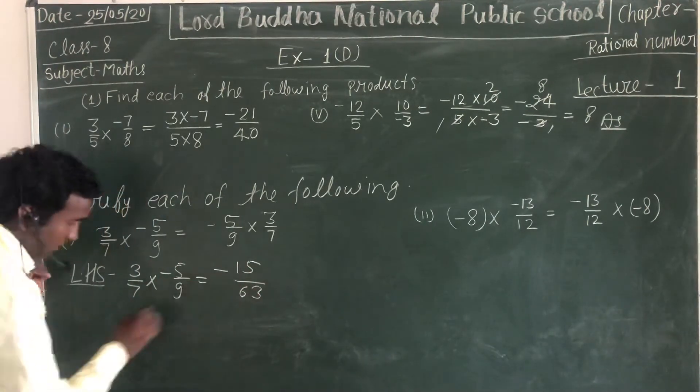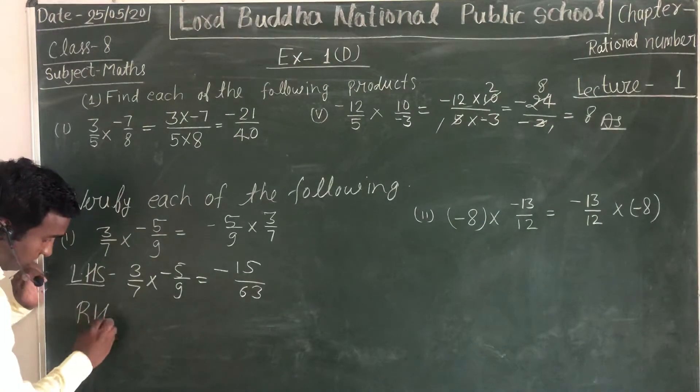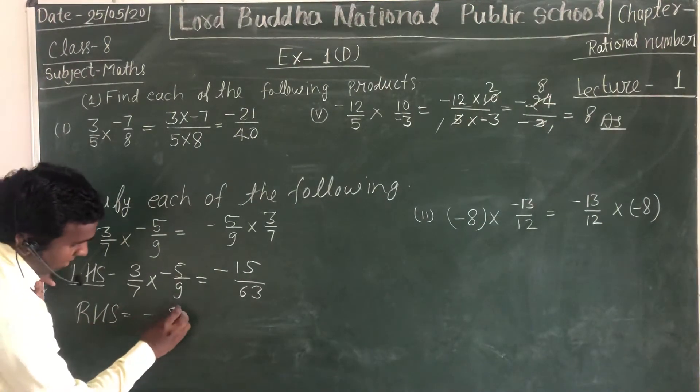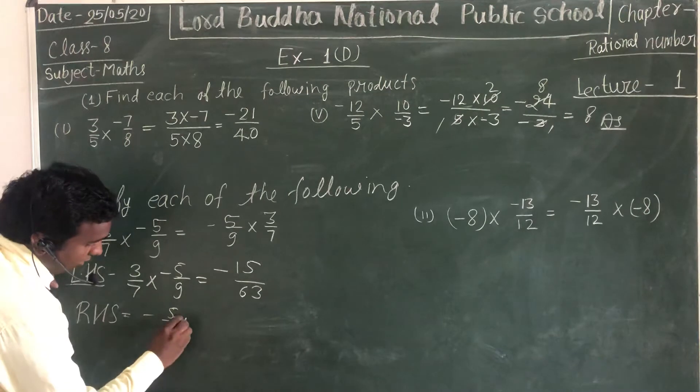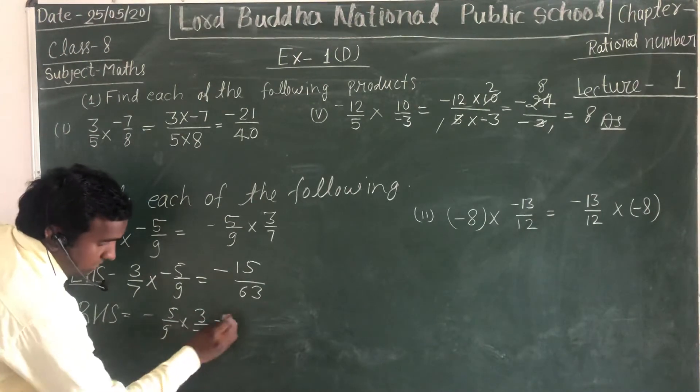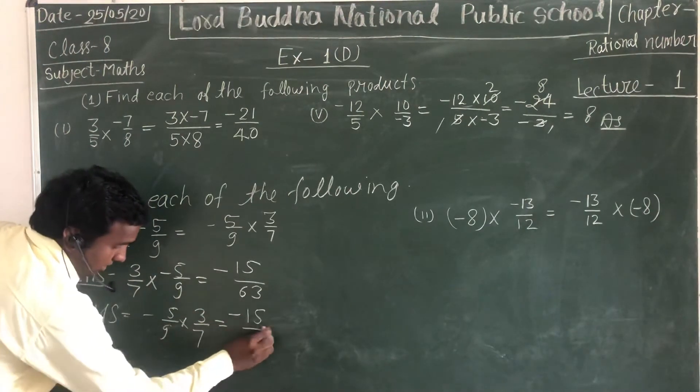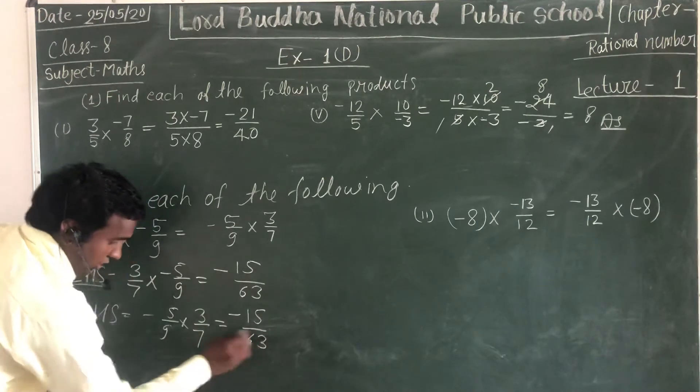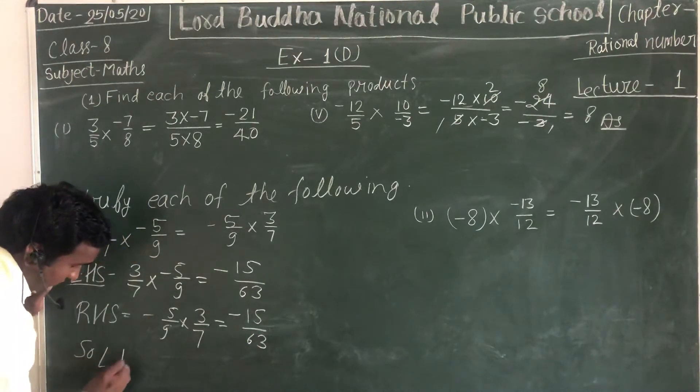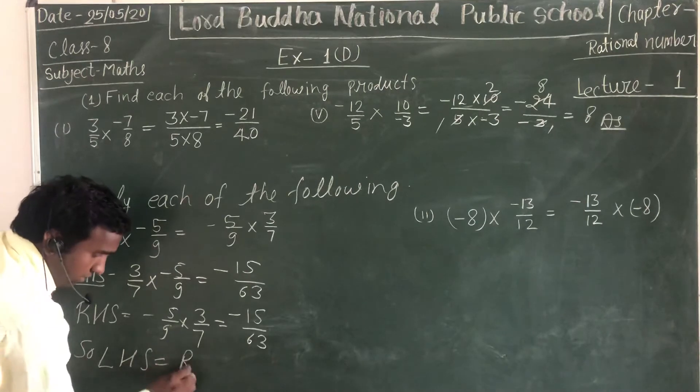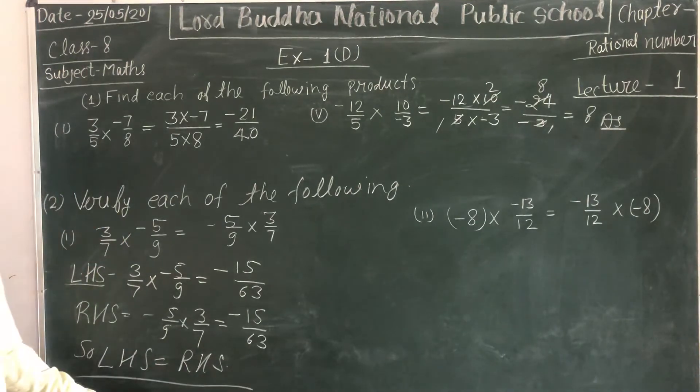Now right hand side: -5/9 into 3/7. 5 times 3 is 15, 9 times 7 is 63. So -15/63. Left hand side equals right hand side. This is the proof. One more example for you.